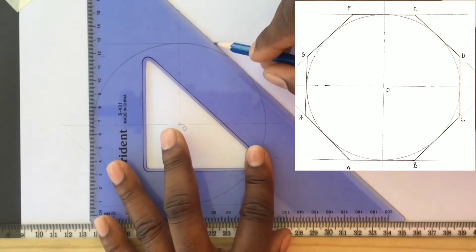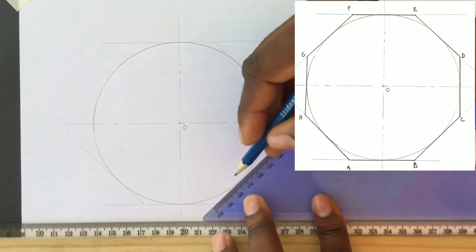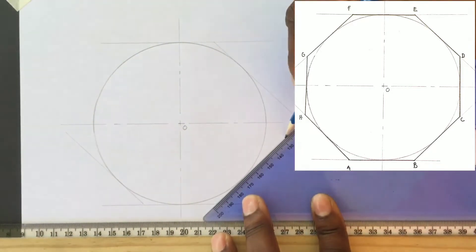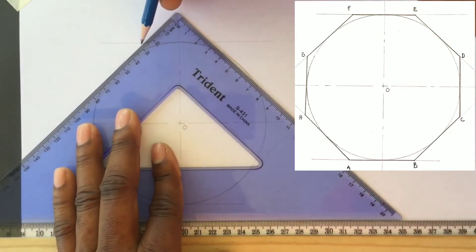Ensure your set square is firmly sitting on your t-square. Ensure your t-square is held firmly against your drawing table.